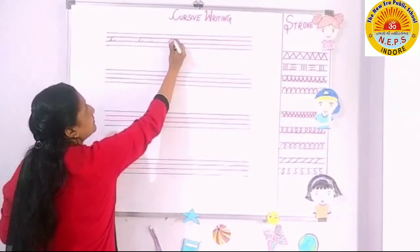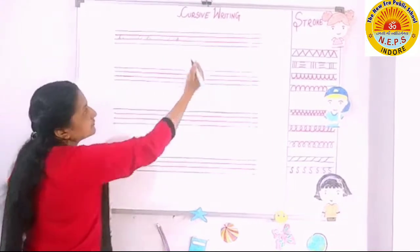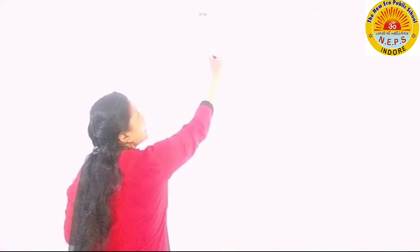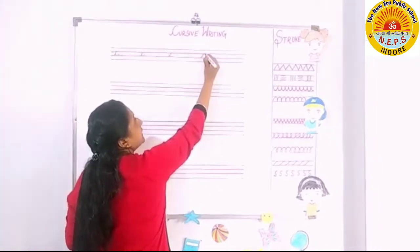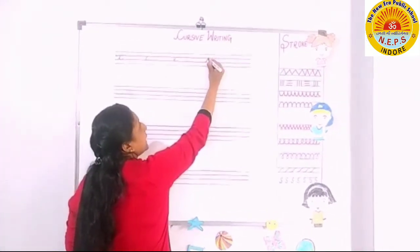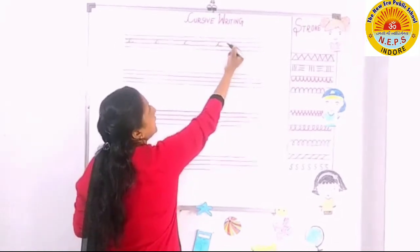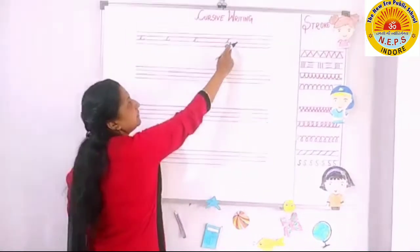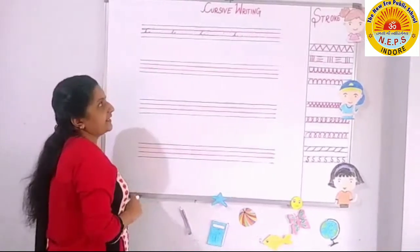Up, down. From the lower midi line, we go to the upper midi line. We make a curve coming downwards. Again, we make a curve. That makes C. C curve, cat.